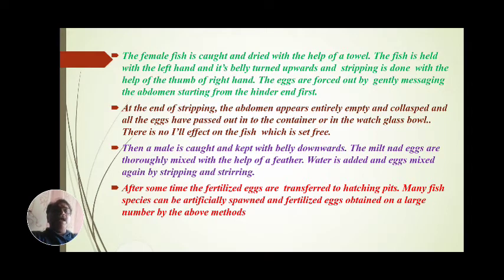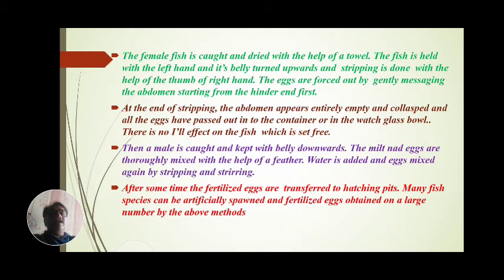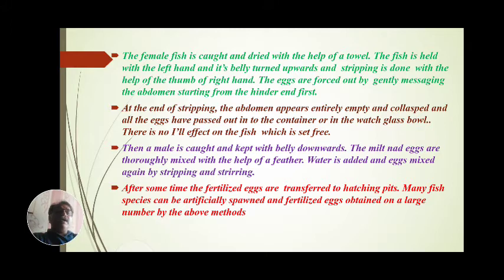The female fish is caught and dried with the help of a towel. The fish is held with the left hand, belly turned upwards, and stripping is done with the thumb of the right hand. The eggs are forced out by gently massaging the abdomen starting from the hind end of the upper column. At the end of stripping, the abdomen appears entirely empty and collapsed, and all the eggs have passed out into the container, watch glass, or bowl.